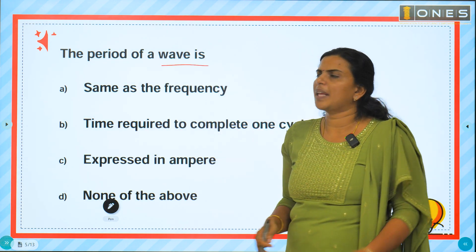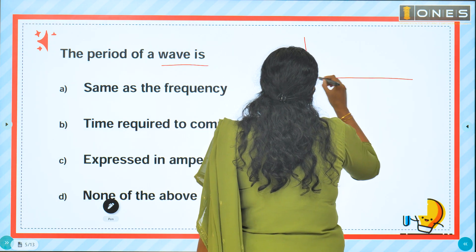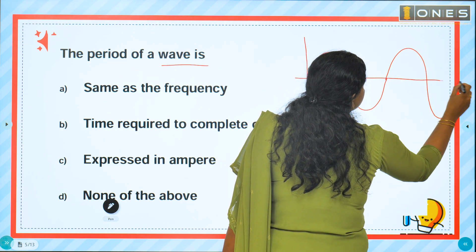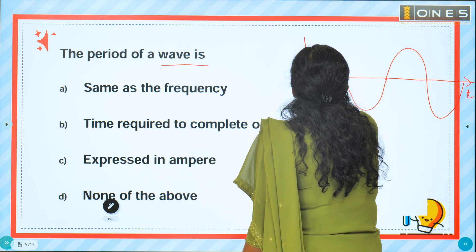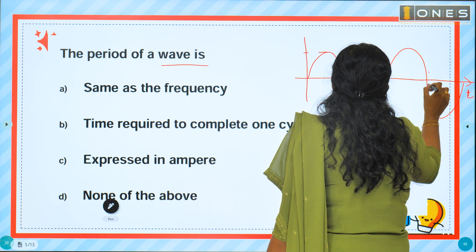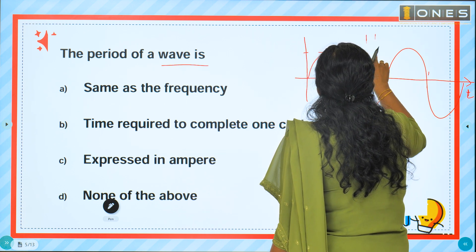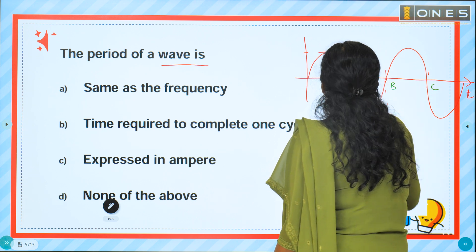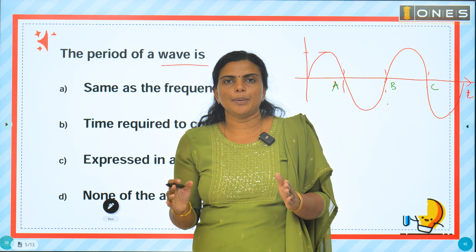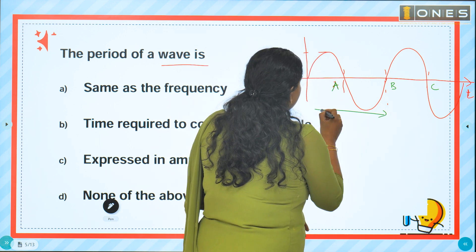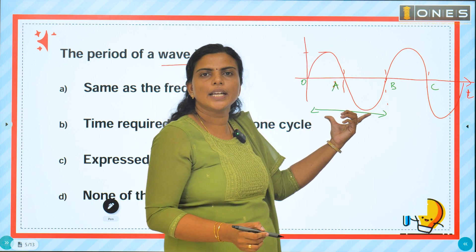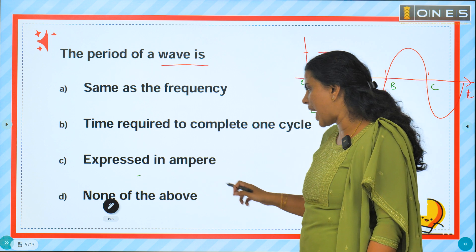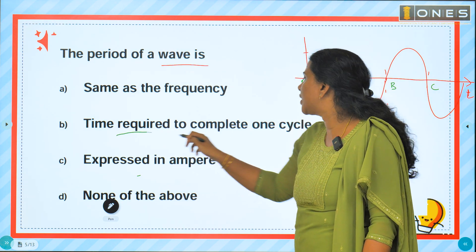The period of a wave is: same as the frequency, time required to complete one cycle, expressed in ampere, or none of the above? The correct answer is: it is the time required to complete one cycle.